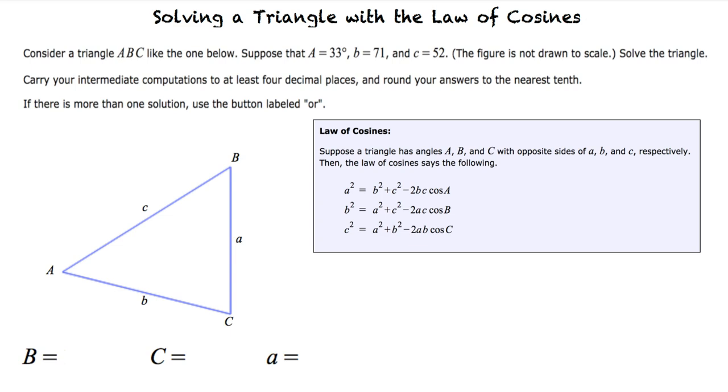Since we're given that angle A equals 33 degrees, side B equals 71, and side C equals 52, we can use the Law of Cosines to find side A. This results in side A equals approximately 39.3987.